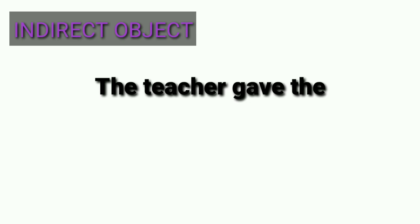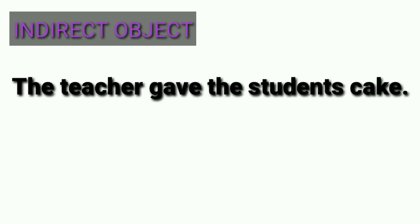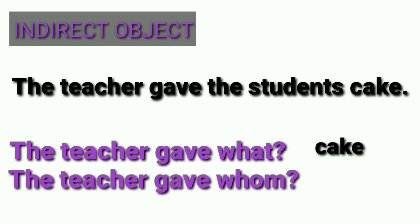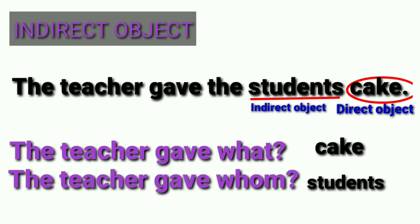For finding indirect object, ask questions with what or whom. The teacher gave what? Answer is cake, so cake is the direct object. The teacher gave whom? Students. The word students is the indirect object.